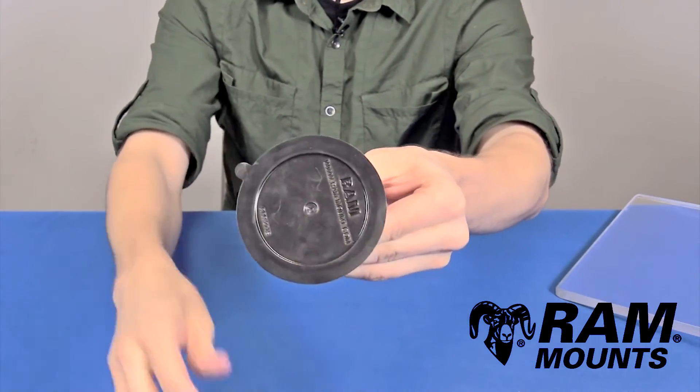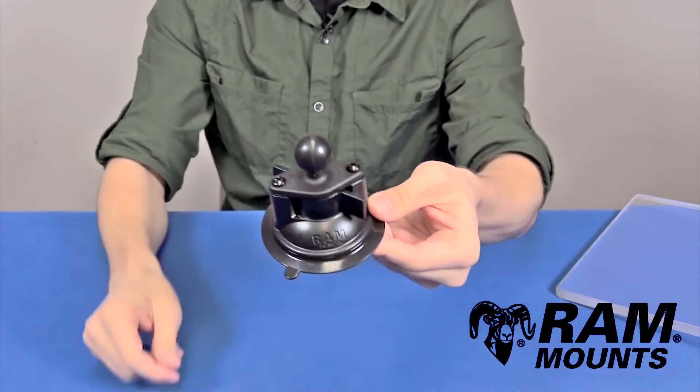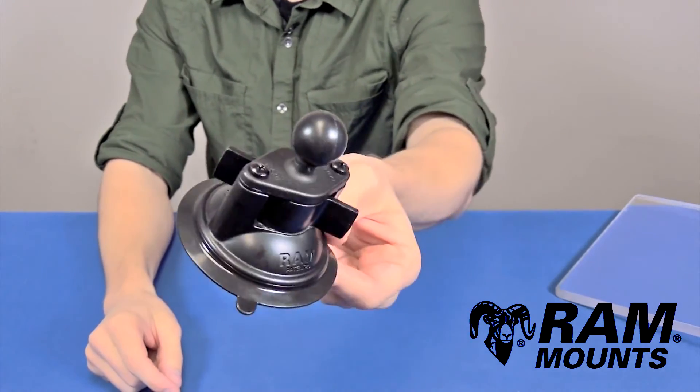And the diameter of the suction platform is 3.3 inches, and is compatible with any of Ram's B-size ball-and-socket mounting components.